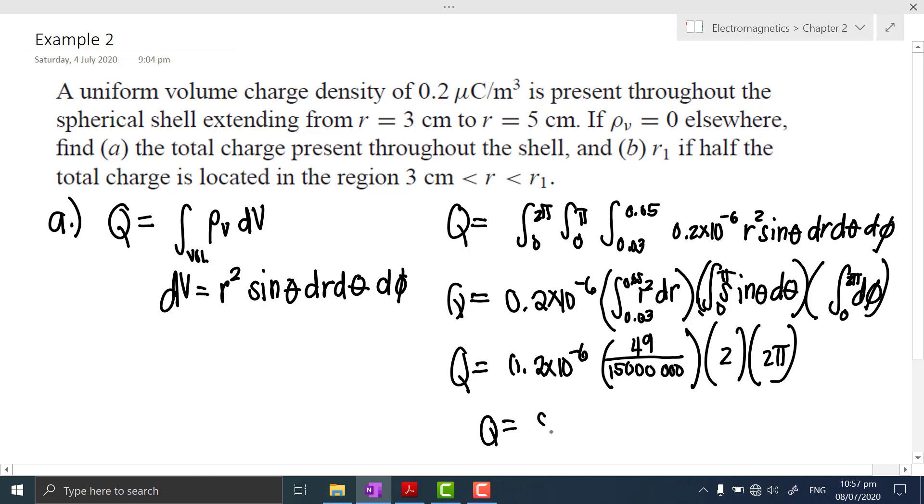Simplifying this equation, you would get 81 or 82.1 times 10 raised to negative 12, which is also equal to picocoulombs. So, that is the answer for part A.